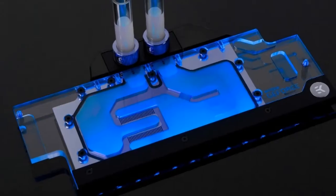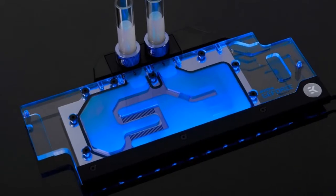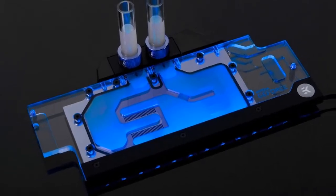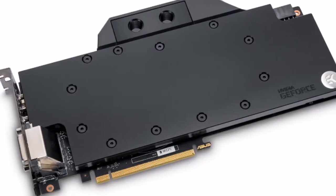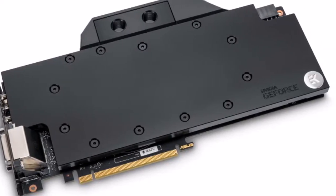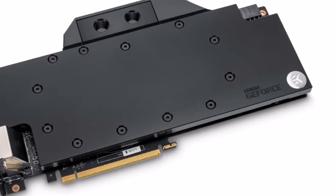The base of the block is made of nickel-plated electrolytic copper while the top is made of high-quality acrylic material or POM acetal material, depending on the variant. The top material does not affect the block performance in any way.